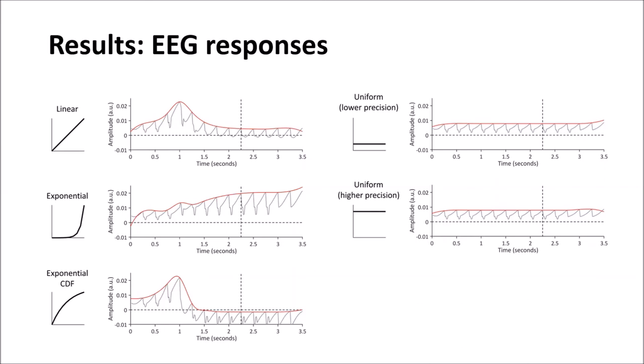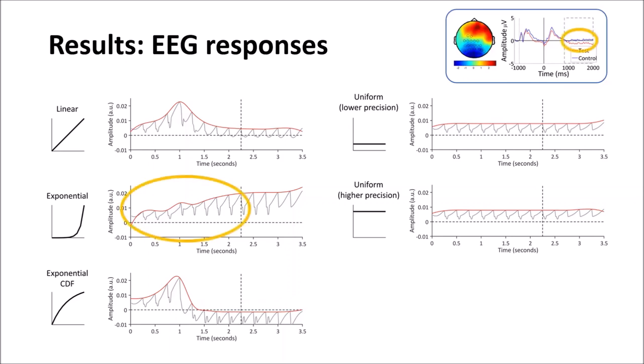We put these simulated EEG responses into a hierarchical regression, with the empirical EEG results as the dependent variable. And of the models we tested, the exponential model best accounted for the ramping of EEG activity during the preparatory interval.